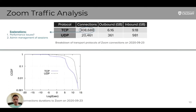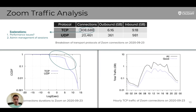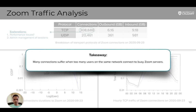This is the log-log complementary distribution plot for TCP and UDP connections to Zoom on one representative day in September 2020. A significant portion of both TCP and UDP sessions have small durations that cannot be attributed to typical sessions, showing that there should be performance issues somewhere on the line that disrupt connections. TCP connections tend to have shorter durations, supporting the second explanation. The hourly TCP traffic to Zoom based on connection state shows that during peak hours only about half of the byte volume is exchanged on good connections — those with typical SYN-FIN handshake signals. We can conclude that many connections suffer when too many users on the same network connect to busy Zoom servers.